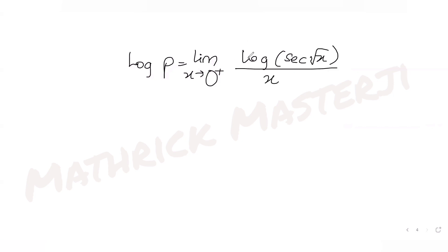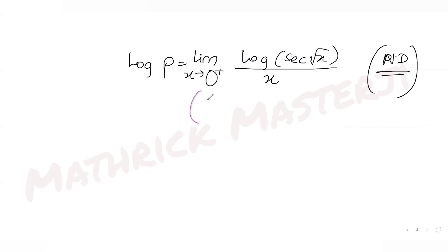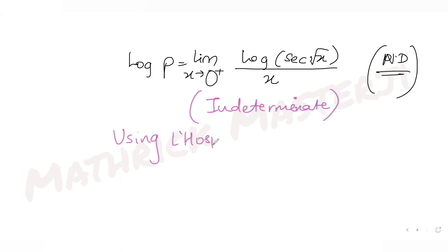Now with it in the form of numerator over denominator, putting x as zero gives a 0/0 indeterminate form — log of zero is undefined and we're also dividing by zero. So when we have this indeterminate form, we can use L'Hôpital's rule, taking the derivative of the numerator and denominator separately.